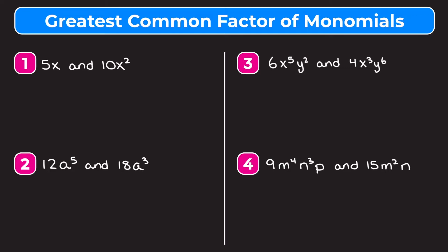We're going to write out each of these monomials as a product of its prime factors. 5 is a prime number, so we keep it as is — we can't break 5 into any factors besides 5 and 1. X is just itself, so 5x is 5 times x. For 10x squared: 10 equals 5 times 2, and x squared equals x times x.